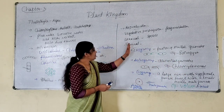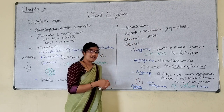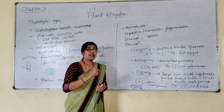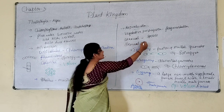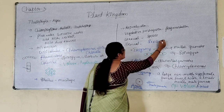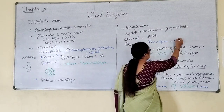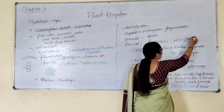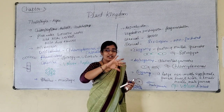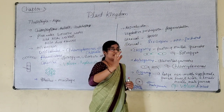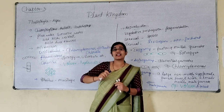When you look at the sex organs in these algae, the sex organs in thallophyta are non-jacketed in nature — meaning the sex organs are not covered by a wall. That is called non-jacketed sex organs in thallophyta.